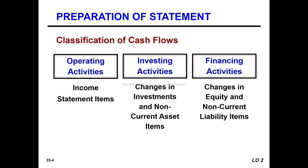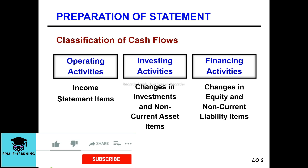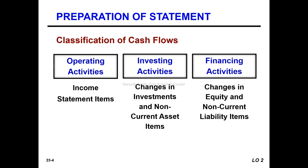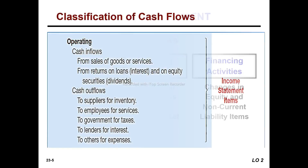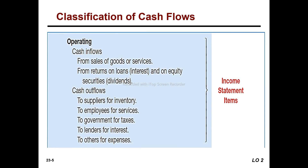If you have a business with income, it will go into operating activity. If you have assets such as property or equipment, those transactions go into investing activity. Your firm's purpose determines whether something is classified as operating or investing. Cash inflow from operating activity corresponds to revenue inflow for the company.